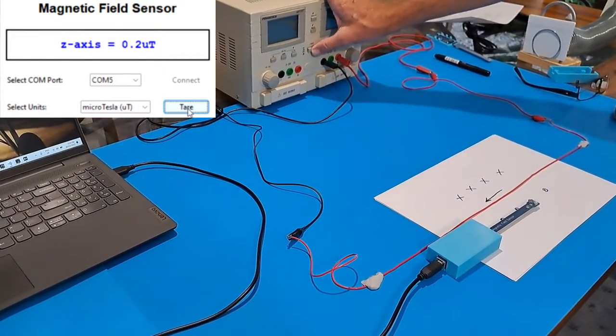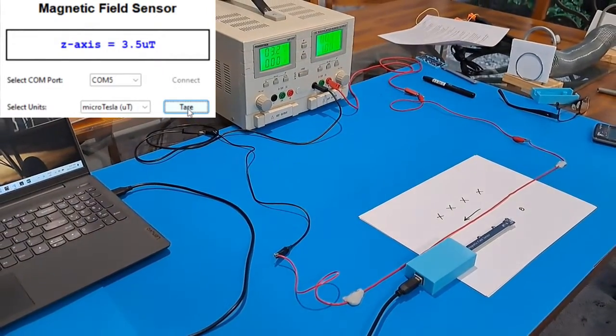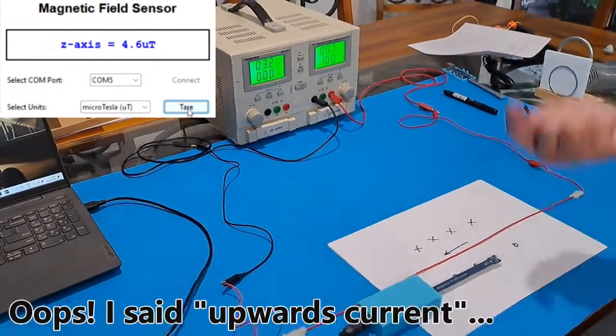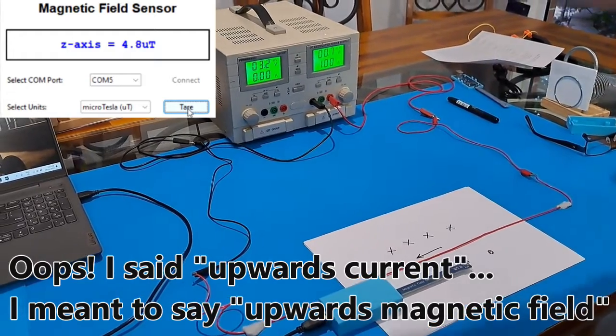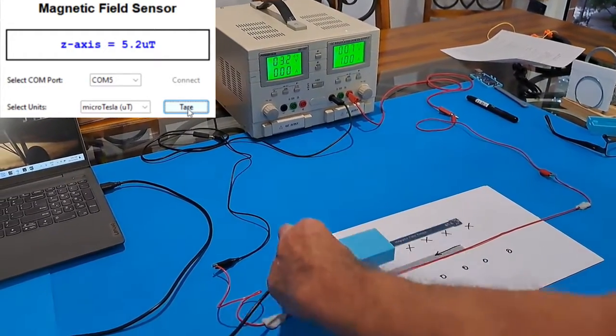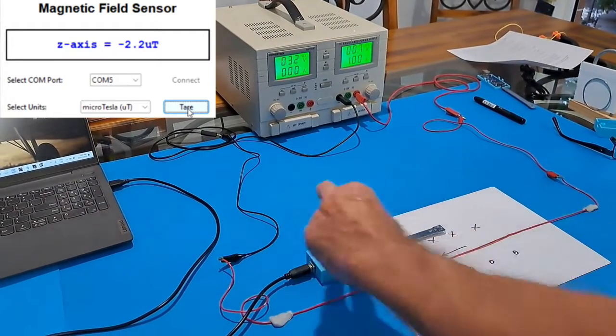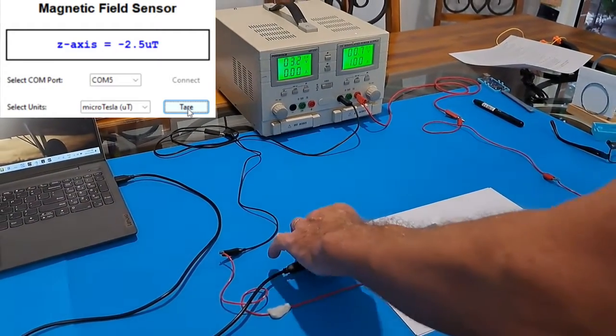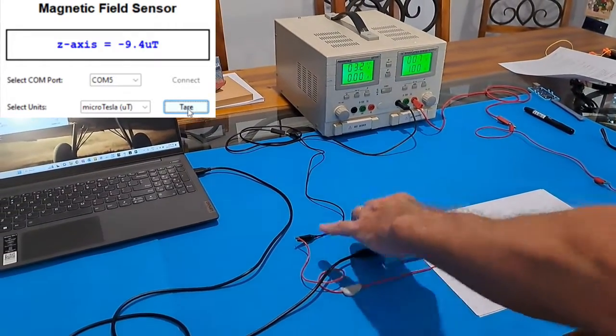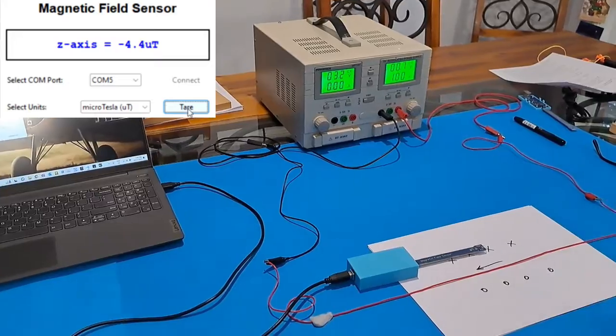Now, if I turn my current on, my one amp going through here, we can see that we've got a positive current, upward current coming out of the page. That's 4.95 microtesla. And if I move my sensor up here, we should find that we've got a negative. So there's negative 2.5, depending on where I put it. So there's a demonstration.